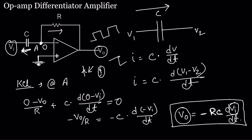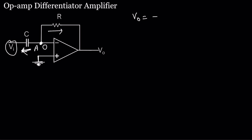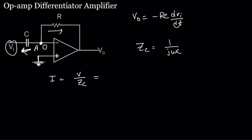That calculation was done in the time domain — V0 = -RC · dVi/dt. Now we will do it in the frequency domain. In the frequency domain, the impedance of the capacitor is Zc = 1/(jωC), and the current i = V · jωC.